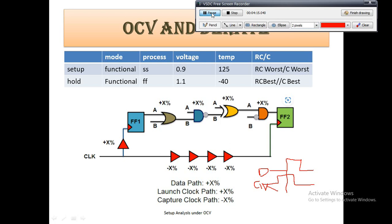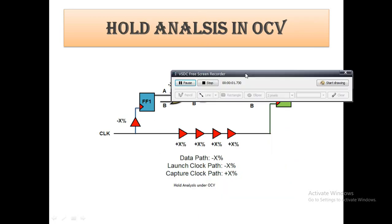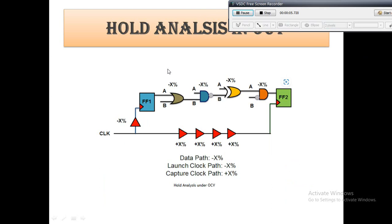For hold analysis: data should be stable for a sufficient period of time, else a hold violation will occur. In OCV, to make things more pessimistic for hold, the data path is made slower and the clock path faster. In the diagram, a positive derate is applied in the clock path, making the clock reach faster. A negative derate is applied in the data path, making the data path slower — opposite to the setup case.